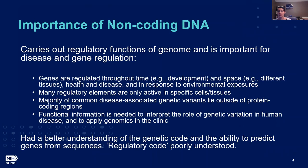These goals came about because at the time of the completion of the Human Genome Project, it was known that non-coding DNA was important for genome function. It was shown to be important for disease and gene regulation. Many of these elements regulate gene expression and are only active in specific cells and tissues.